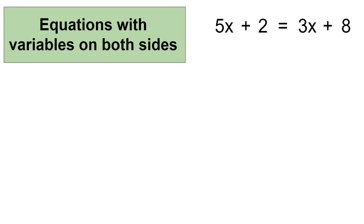In this case, we have the variable term 5x on the left side of the equal sign, and on the right side of the equal sign we have the variable term 3x. The first step is to remove one of the variable terms so that there is only one.